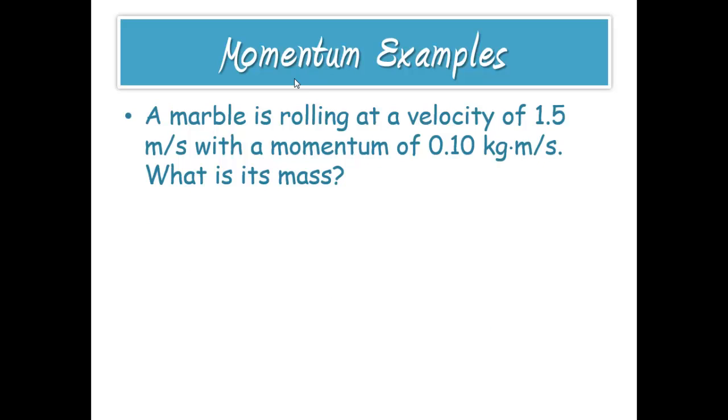All right. Let's try another one. I'll switch back to red because I think it's a little easier to see maybe. All right. So we set our equation already. Write that up here. I always like to write the equation down. And I always like to write this over here. So we know what we have. A marble is rolling at a velocity of 1.5 meters per second with its momentum of 0.10 kilogram meters per second. What is its mass?